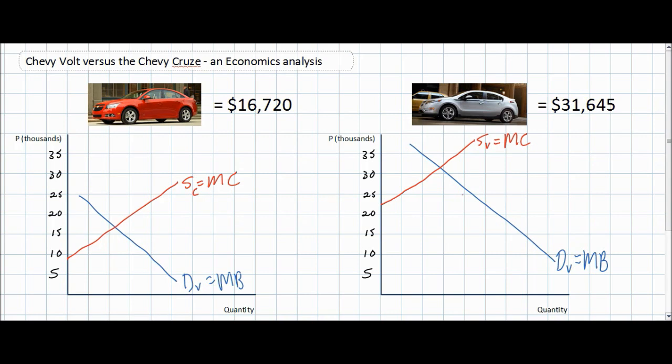When considering marginal cost, we know that traditional petrol engines are lower cost, they're cheaper for General Motors to produce than the new plug-in hybrid battery-powered engines in the Chevy Volt. Therefore, the marginal cost is much lower for the Chevy Cruze than it is for the new Chevy Volt. Therefore, the supply of Chevy Cruzes will be greater than the supply of Chevy Volts.